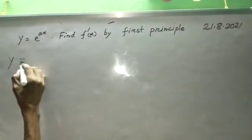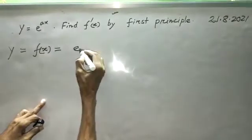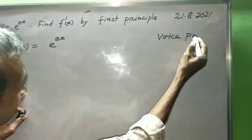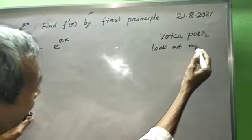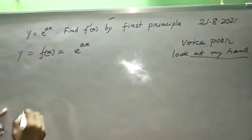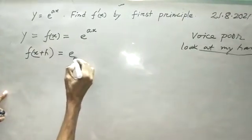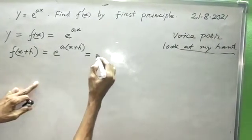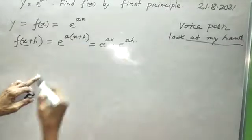Let y equal to f(x) equal to e to the power ax. Now, f(x+h) equal to e to the power a(x+h), which equals e to the power ax into e to the power ah.